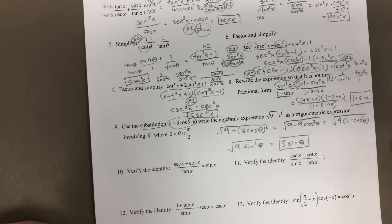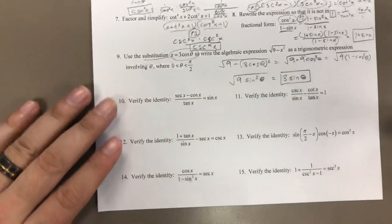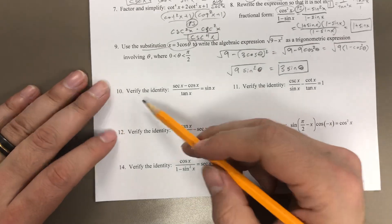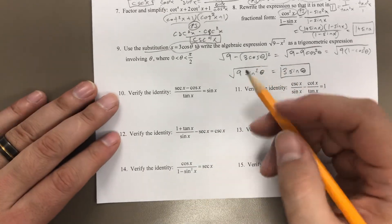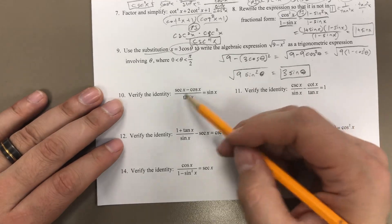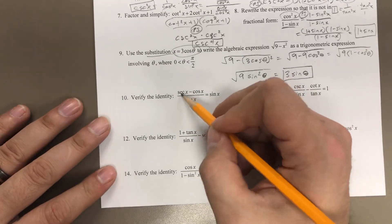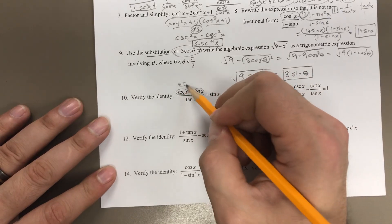We wouldn't ask anything like that on the test — this isn't even something we put in the homework. But the verify-the-identity problems would definitely be on there, so make sure you practice some of these. So number 10: verify the identity. You've got to make sure this expression equals sine. One thing you can do is turn everything into sines and cosines.